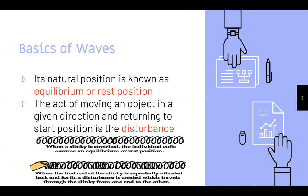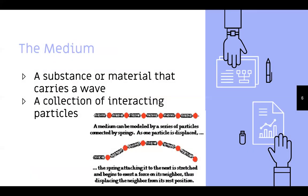What is a medium? A medium is a substance or material that carries a wave — it's a collection of interacting particles. A medium can be modeled by a series of particles connected by springs. As one particle is displaced, the spring attached to the next stretches and begins to exert a force on its neighbor, thus displacing the neighbor from its rest position.